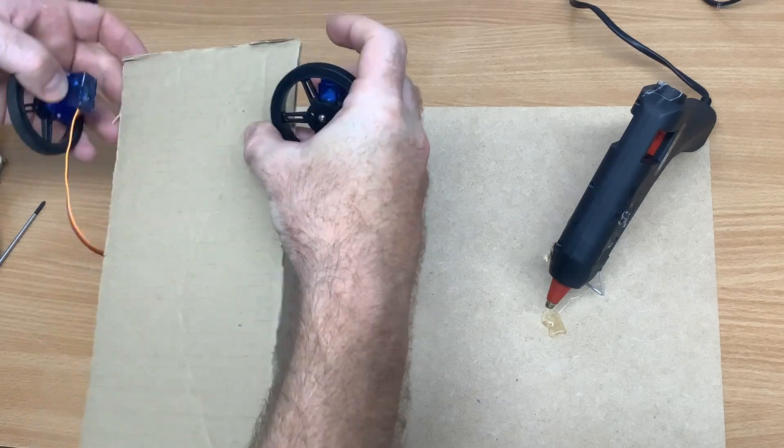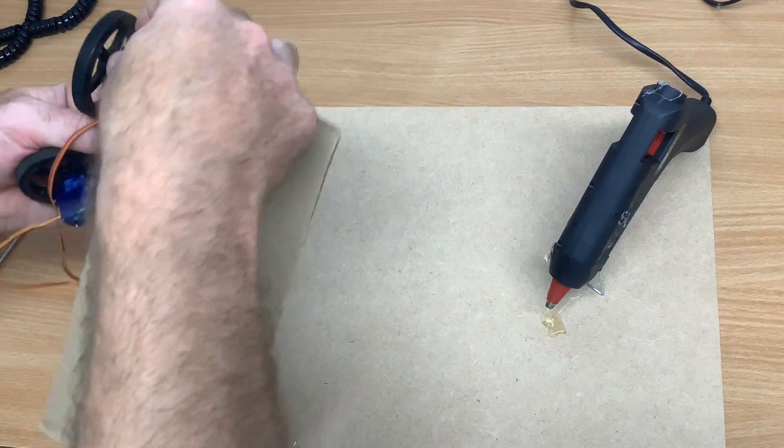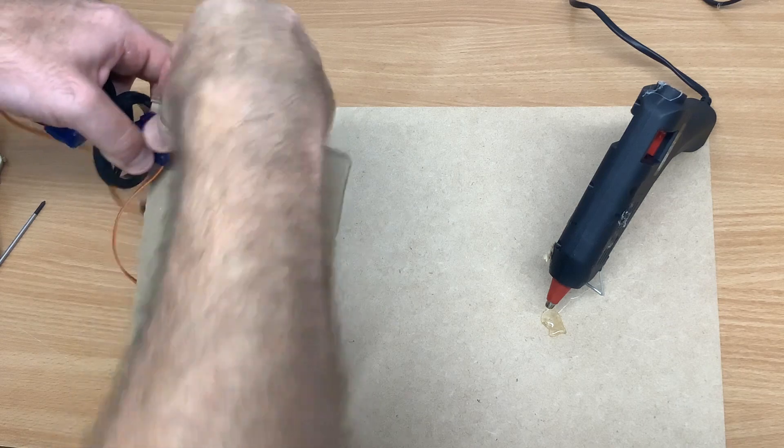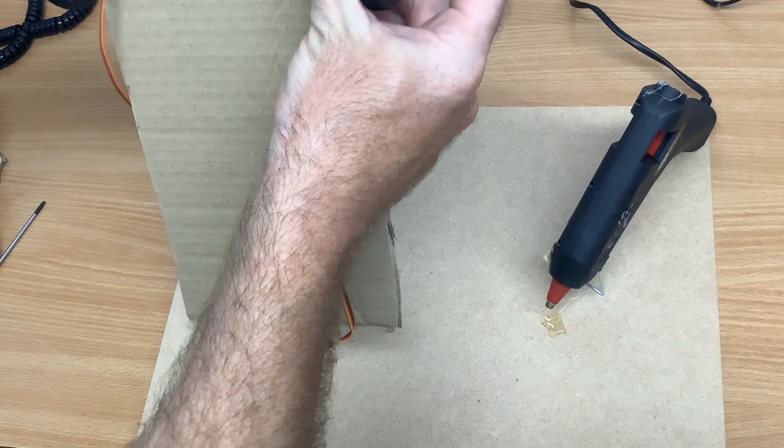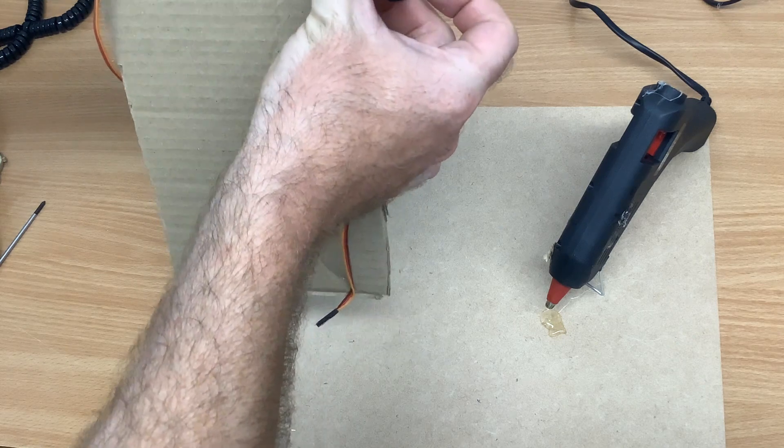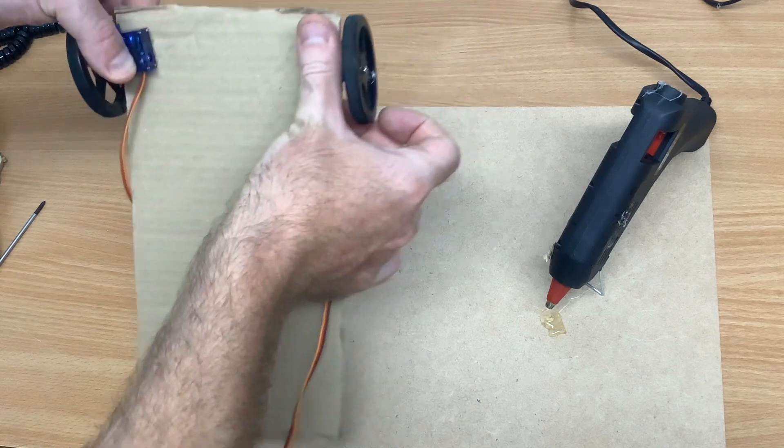What we need to make sure is that the wires are falling down the length of the cardboard. Put those at the front there with the wires trailing down the length of the cardboard. We're going to stick those in place now.